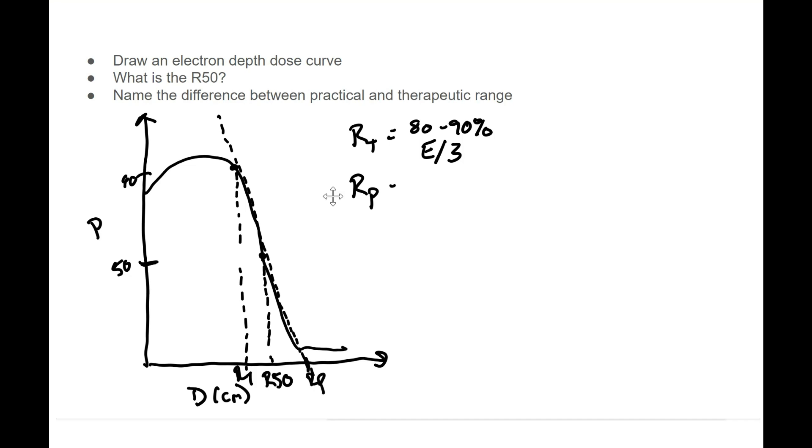So there it is. That's the difference in how you find these things. Therapeutic range, like I said, we use this a bit more in the actual clinic. However, the practical range could be used to find several other parameters that maybe we could end up using also.